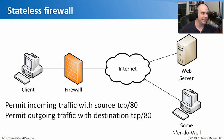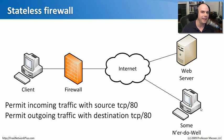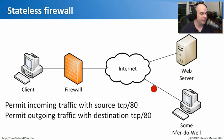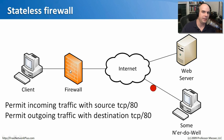But because this is a stateless firewall and I've told it: if you ever see anything coming in with a destination TCP port 80, allow it in — because of that bad policy, if somebody out there is communicating, they could go right into my system over port 80. This firewall has no idea if that's legitimate traffic or not, because it is stateless.